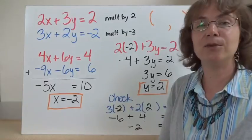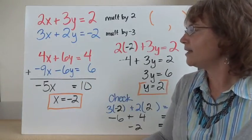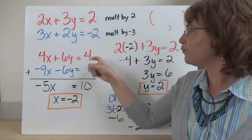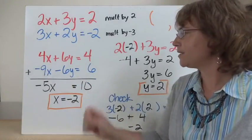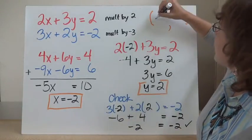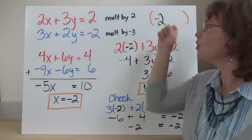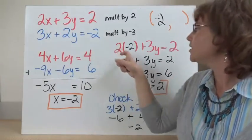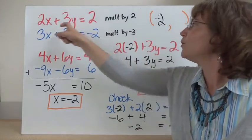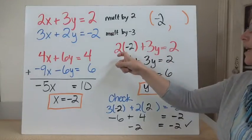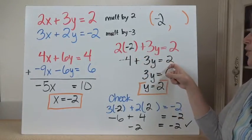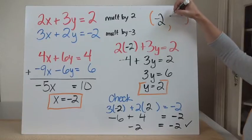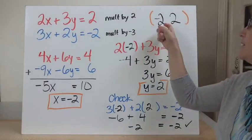Now I can add them and eliminate the y variable. I get 0y, and 4x plus negative 9x gives me negative 5x, which equals 4 plus 6, which is 10. Divide both sides by negative 5, and x equals negative 2 — that's my x coordinate. Now I use substitution with the first equation: 2 times negative 2 plus 3y equals 2. That's negative 4 plus 3y equals 2. Add 4 to both sides: 3y equals 6. Divide by 3, and y equals 2. This is the point where these two lines cross: negative 2 comma 2.